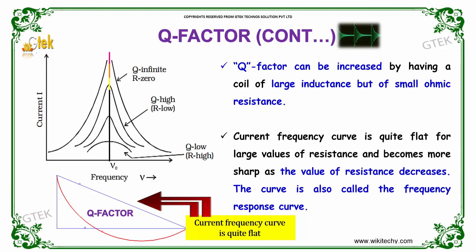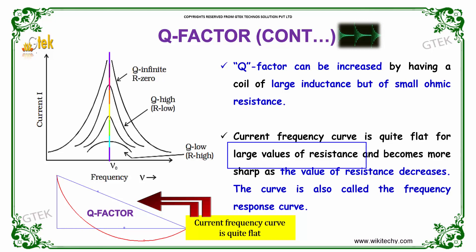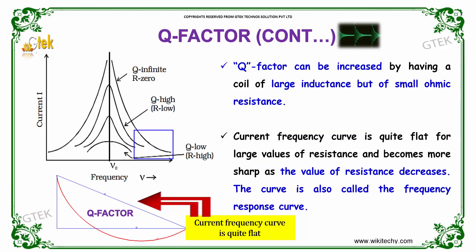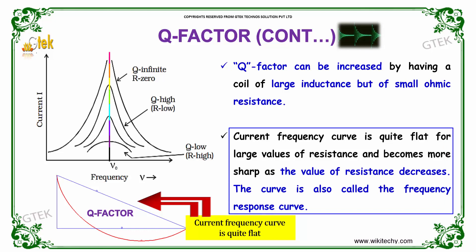The Q factor is increased by using a coil of large inductance but small ohmic resistance. The current-frequency curve is quite flat for large values of resistance and becomes sharp as resistance decreases. As you can see here, for large resistance the frequency curve is flat, and as resistance decreases the frequency curve becomes sharp. This curve is also called the frequency response curve.